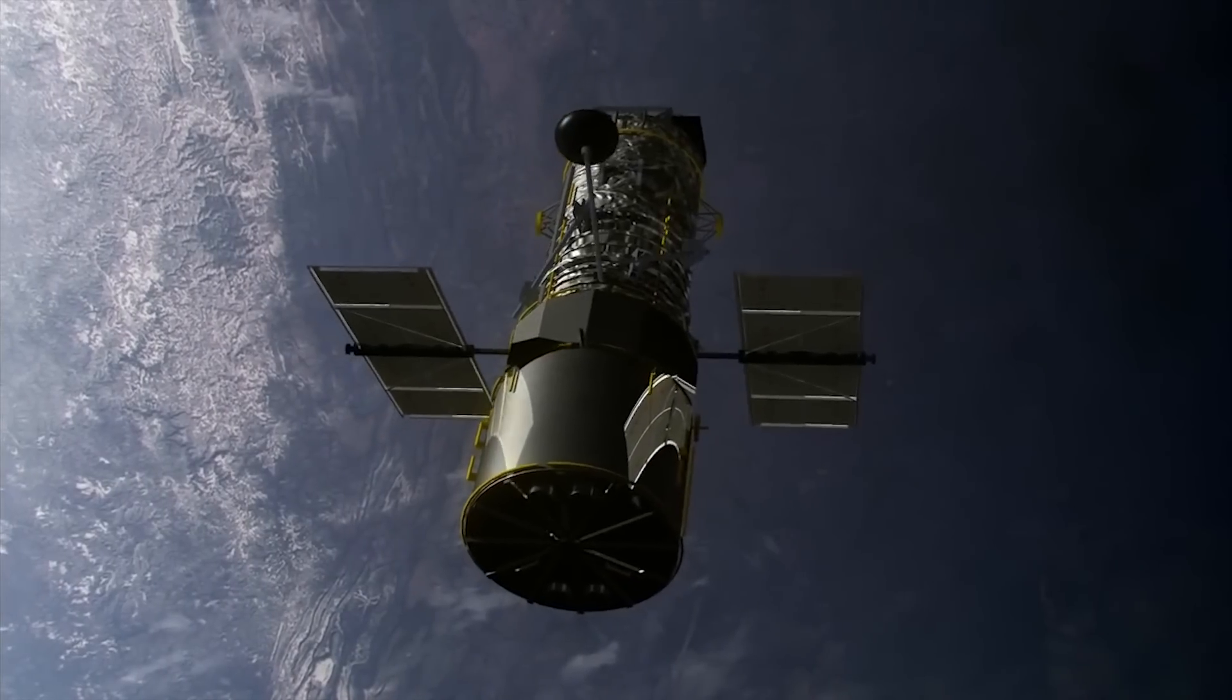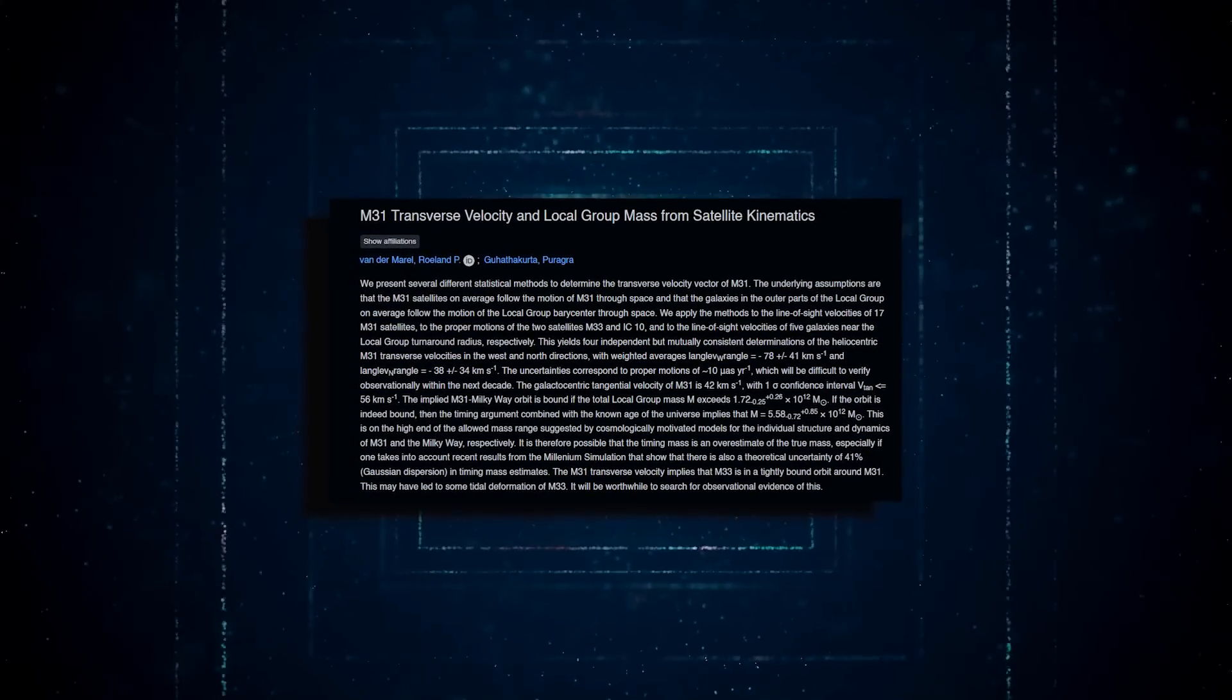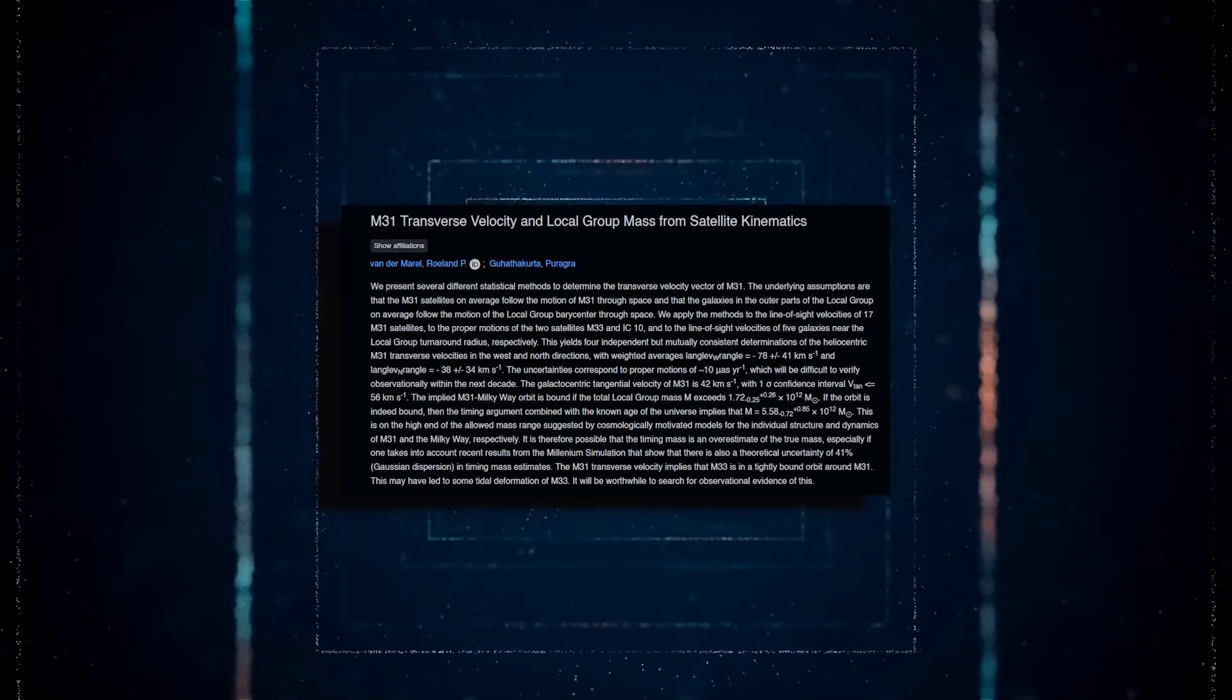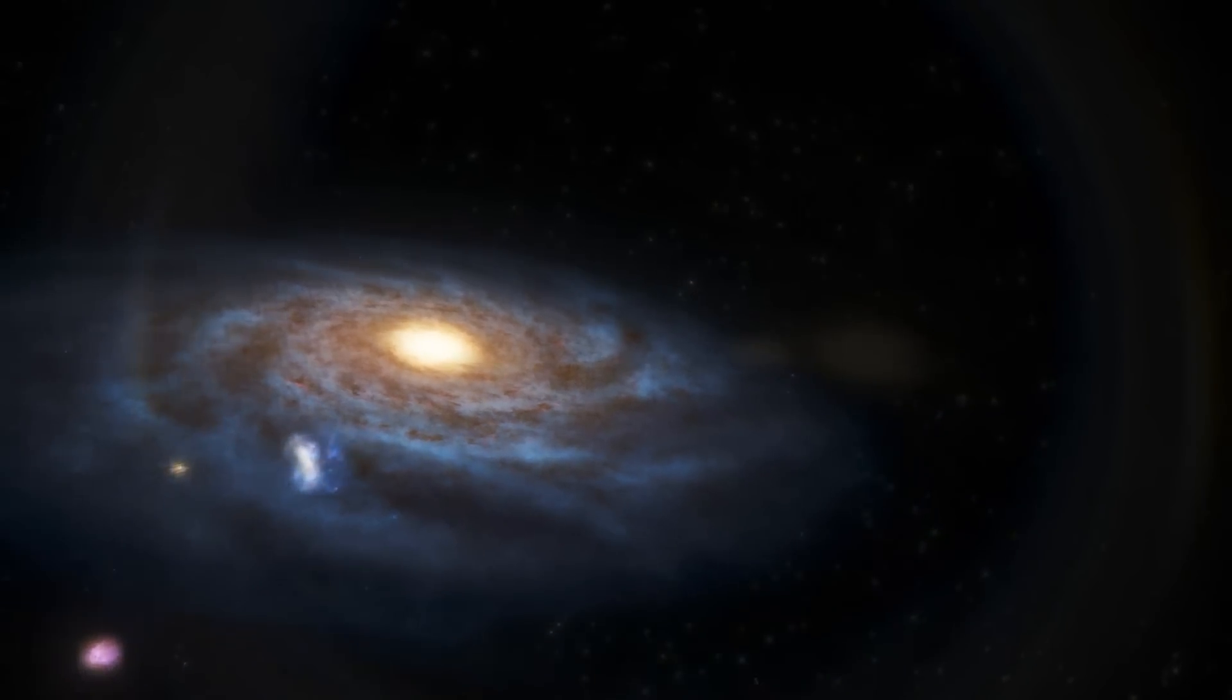The Hubble Space Telescope team, directed by van der Marl, made exceptionally precise measurements of M31's sideways motion, removing any doubt that it is destined to smash and merge with the Milky Way.